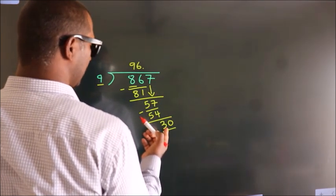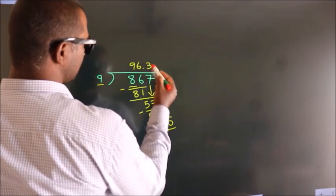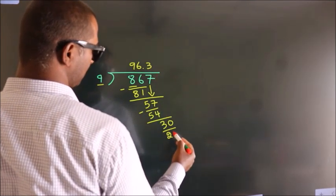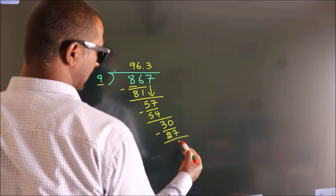A number close to 30 in the 9 table is 9 times 3 equals 27. Now we subtract, we get 3.